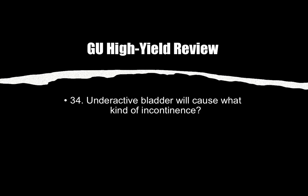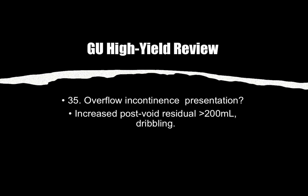Number thirty-four and thirty-five: An underactive bladder will cause overflow incontinence. Overflow incontinence presents with increased post-void residual — PVR greater than 200 milliliters — and dribbling. If somewhere in the stem you see PVR greater than 200, that is overflow incontinence.